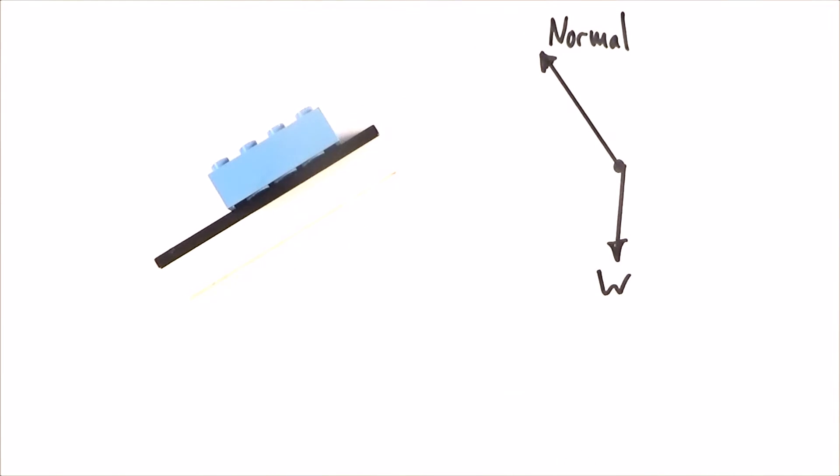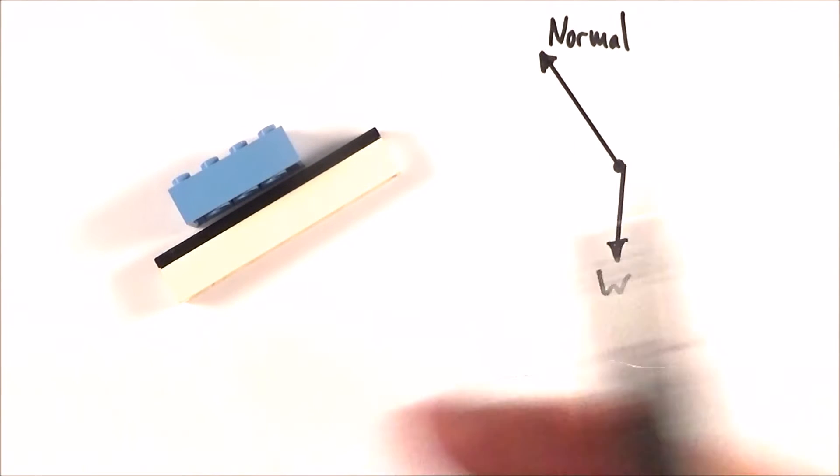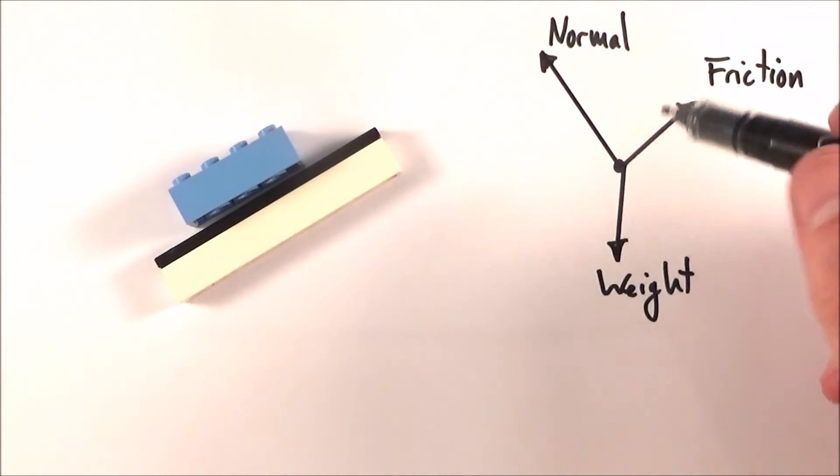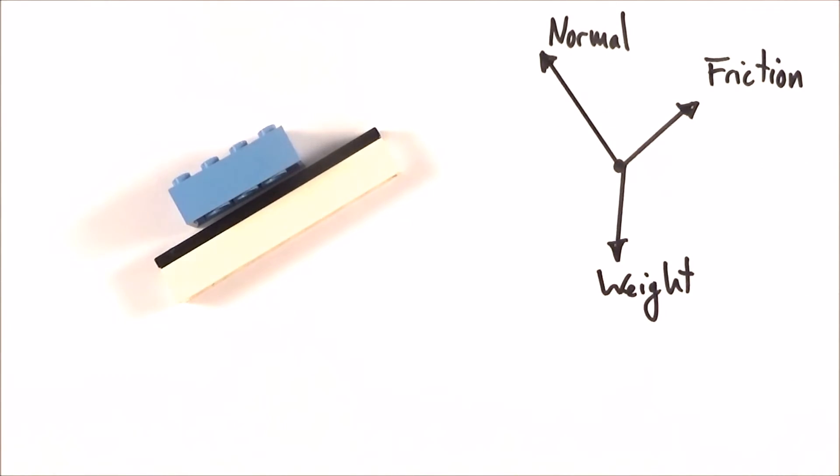Finally, there must be another force that stops it sliding down. In this case, it's friction. The friction is going to be acting up the slope because it's wanting to stop it moving down. So what we have here is my free body diagram for the forces acting on a block on the slope.